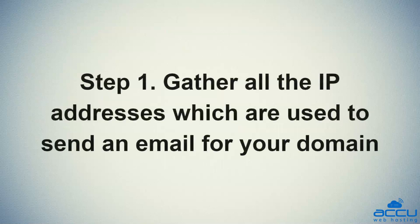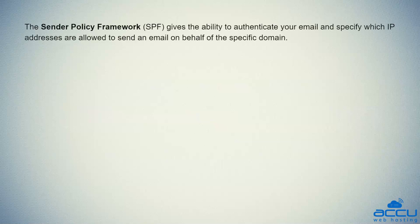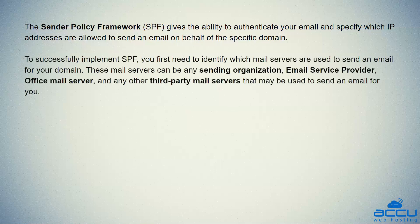Step 1: Gather all the IP addresses which are used to send an email for your domain. The Sender Policy Framework (SPF) gives the ability to authenticate your email and specify which IP addresses are allowed to send an email on behalf of the specific domain. To successfully implement SPF, you first need to identify which mail servers are used to send an email for your domain. These mail servers can be any sending organization, email service provider, office mail server, and any other third-party mail servers that may be used to send an email for you.